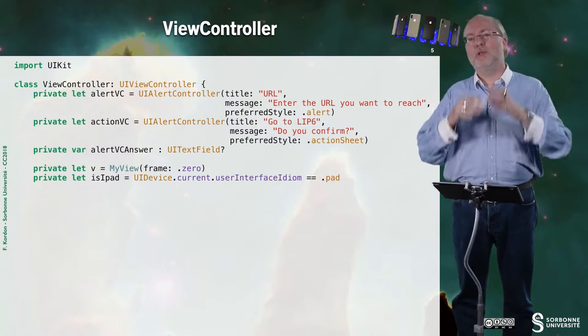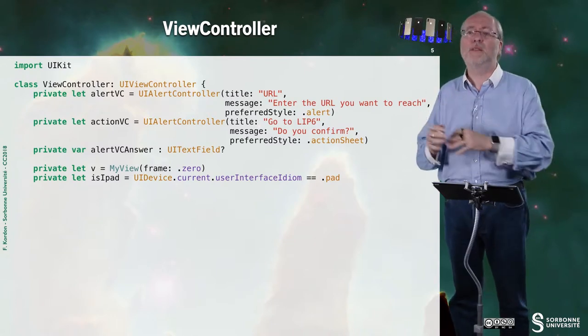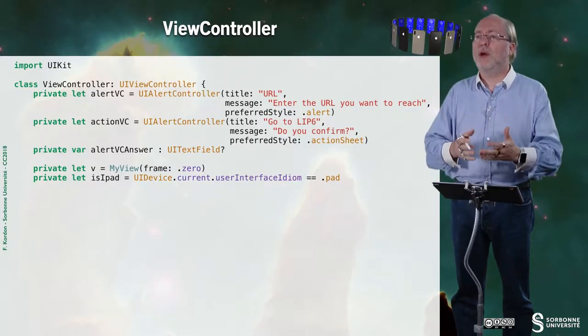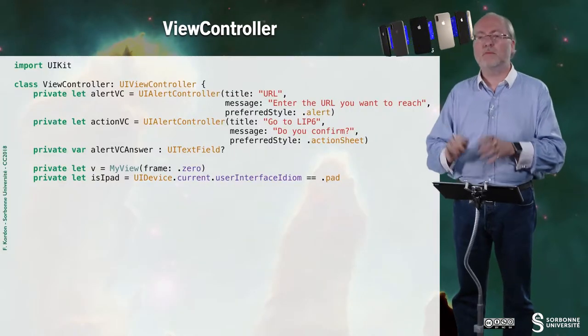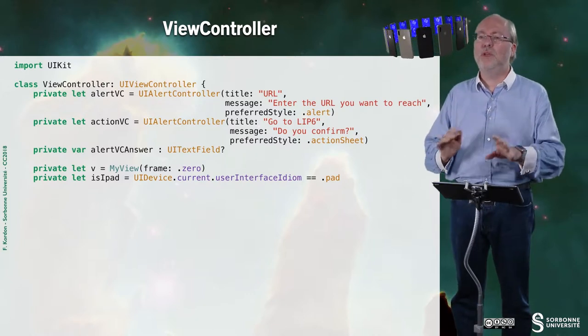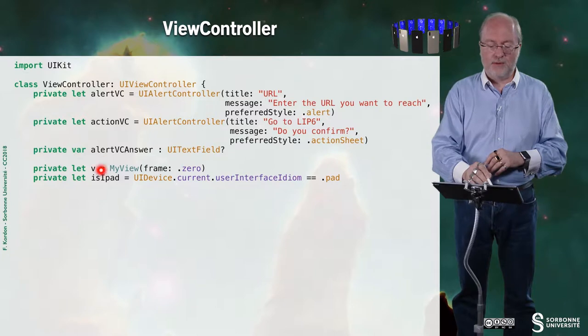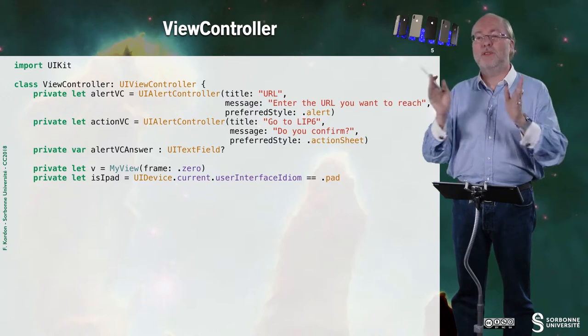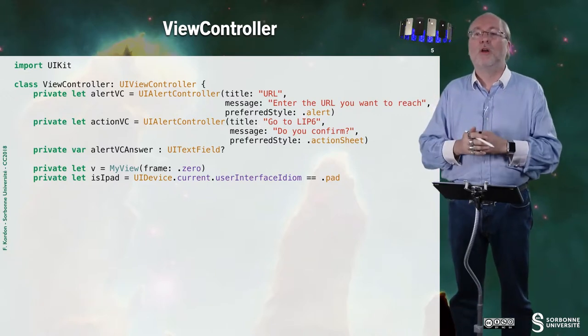Let's look at the view controller, respecting the MVC model — the view controller and the view are separated. I first declare two UI alert controllers: the first one to enter a URL, the second to confirm going to the default web page of my laboratory. I also have a UI text field set to nil because it's an optional, and V is an instance of my view with no frame initially — a frame with coordinates 0,0 and width 0,80, just for initialization. I also have a boolean that is true if running on an iPad.